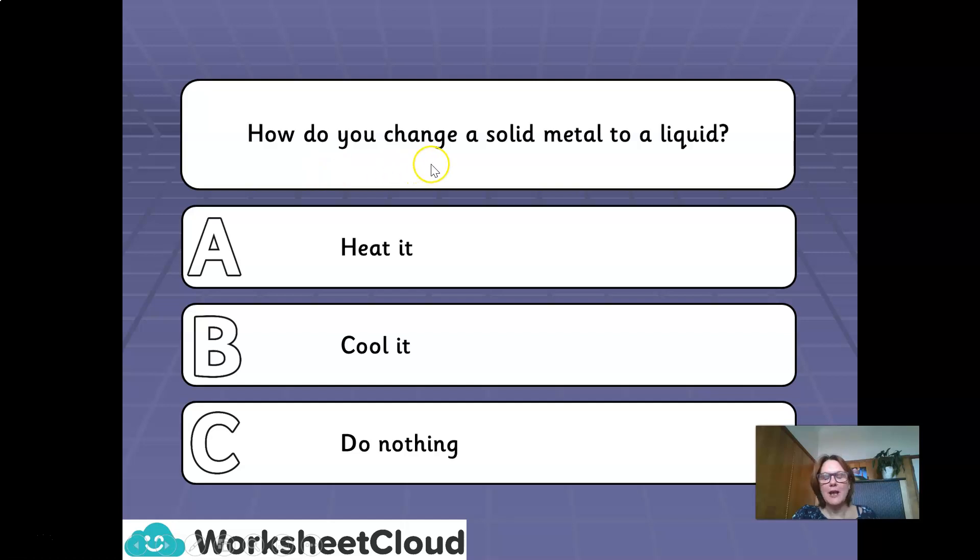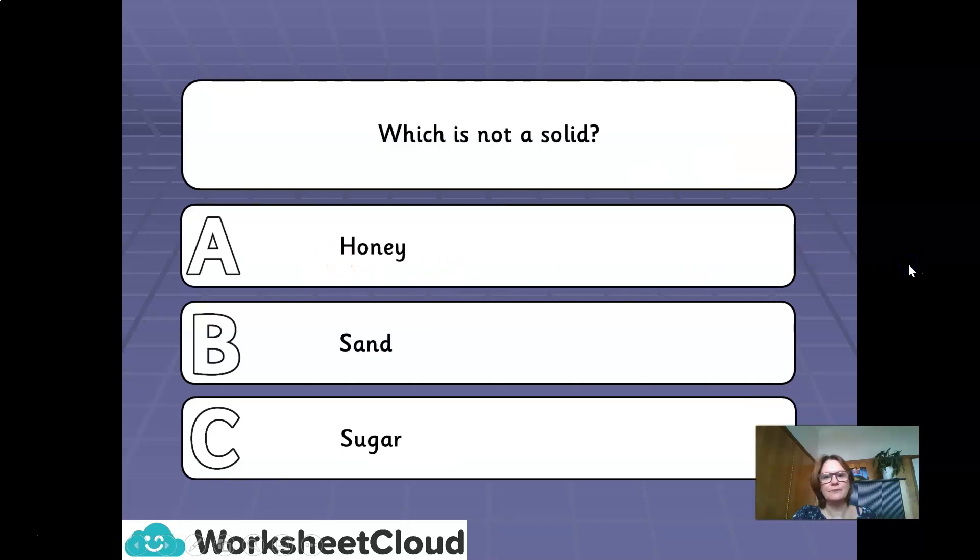How do you change a solid metal to a liquid? A. You heat it. B. You cool it. Or C. You do absolutely nothing. A. You heat it. To change a solid metal to a liquid, you heat it. Which of these is not a solid? A. Honey. B. Sand. C. Sugar. Which of them is not a solid? Shouting out your answers. Correct. A. Honey is not a solid.